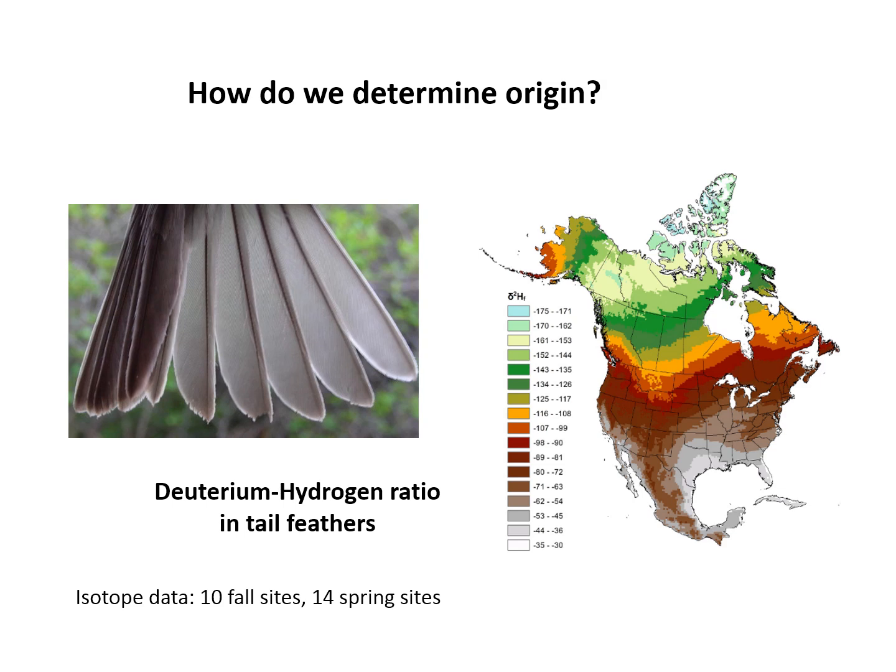The isotope signature in the rainfall of the local region where a bird grows its feathers is built right into the feather. Those feathers are retained from the time they're grown until the next year's molt, which happens right after breeding. So the bird grows its feathers as a juvenile or adult on the breeding ground.